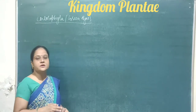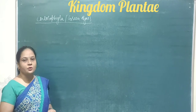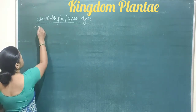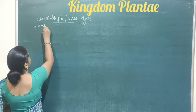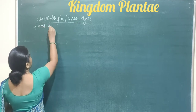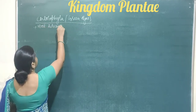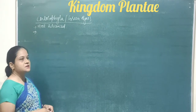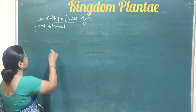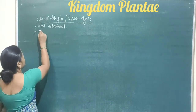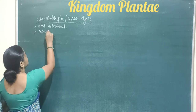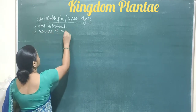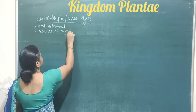First, we take the description of Chlorophyta or the green algae. Green algae is the most advanced form of algae and it is also known as the ancestors of higher plants.